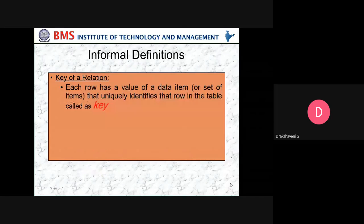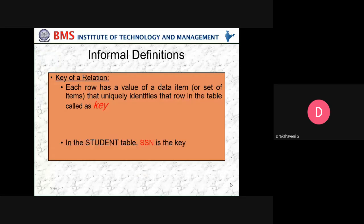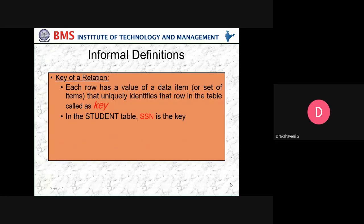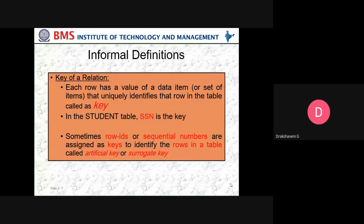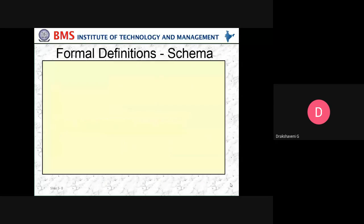The informal definition of a key of a relation: each row has a value of a data item or a set of items that uniquely identifies that row in the table, called a key. In the student table, SSN is the key. Sometimes row IDs or sequential numbers are assigned as keys to identify the rows in the table, called an artificial or surrogate key.